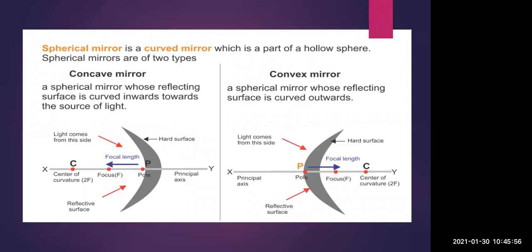We are studying this because it is the basic part. If you know these things it will be easier to draw ray diagrams and solve problems. XY is the principal axis, which has a center of curvature, focus, and pole. The pole is the point where the principal axis intersects with the mirror.